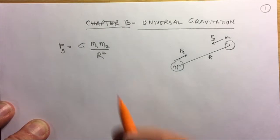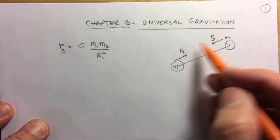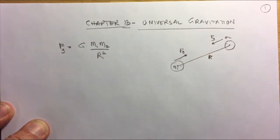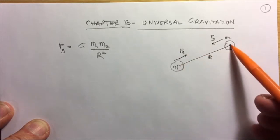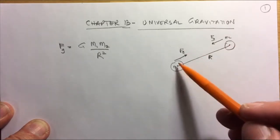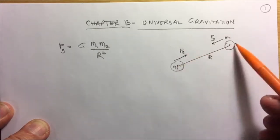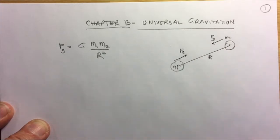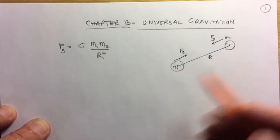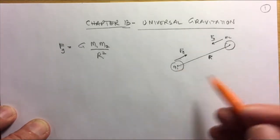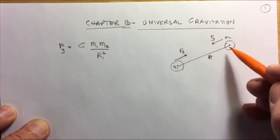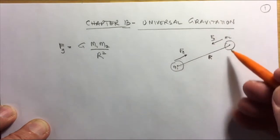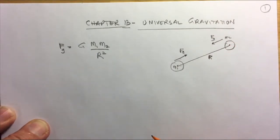This is a force that acts over a distance with nothing in between, which was difficult for people to accept — even for Newton. How can a force act with nothing in between, just a vacuum? But we had to come to this conclusion because otherwise the Moon would not go around the Earth — it would just go off in a straight line. There has to be a force pulling it inward.